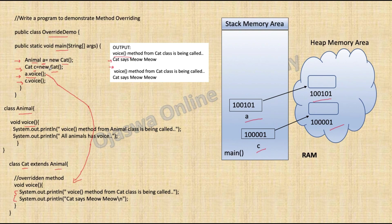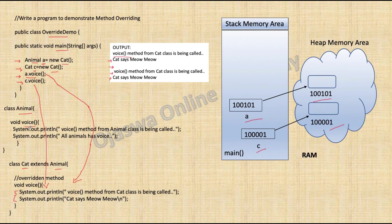After execution, control comes back and the next statement c.voice is executed. Now c is the Cat object and it has a Cat reference. When this statement is executed, the compiler does not check whether the voice method is present in Animal class or not. It will give a call to the voice method belonging to the object type — that is, class Cat — and the code inside is executed, so the same output is printed again. If you want to invoke the voice method of Animal class, you need to create an object of Animal: animal a = new Animal. Only then will the voice method of Animal class be invoked.